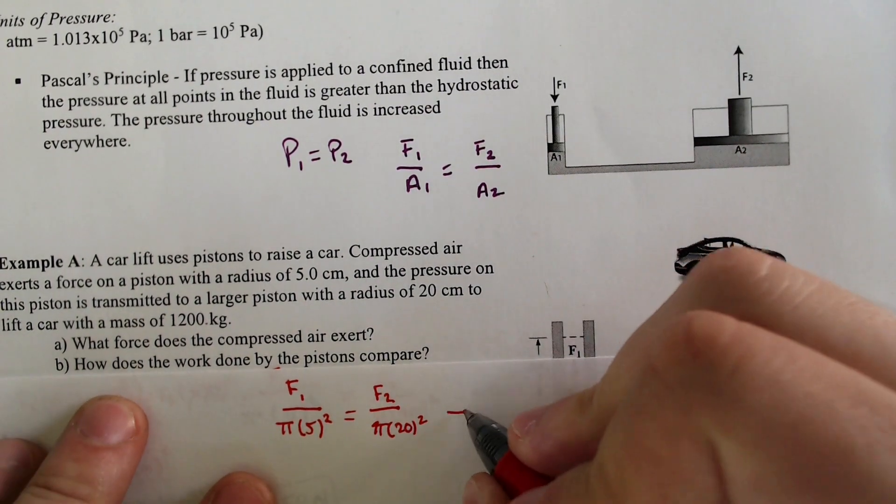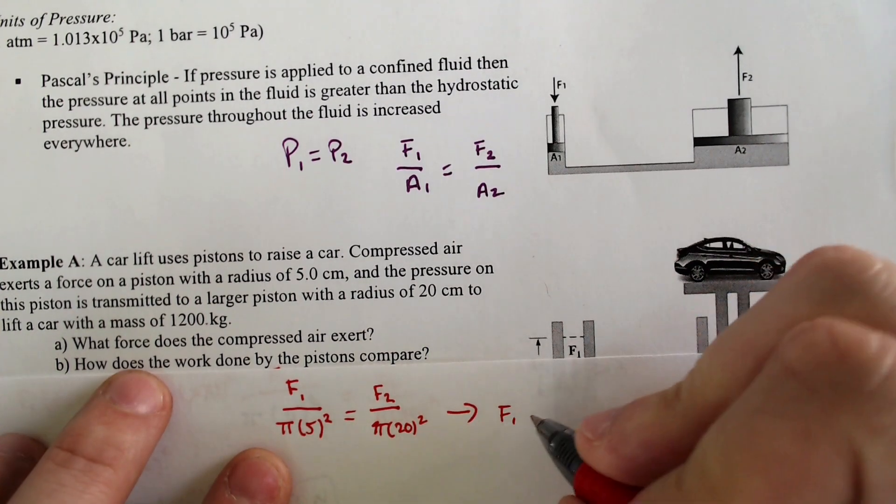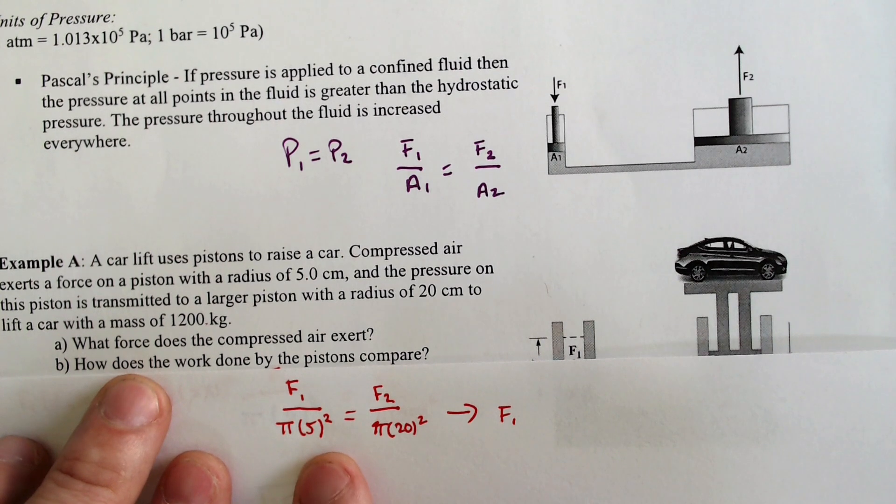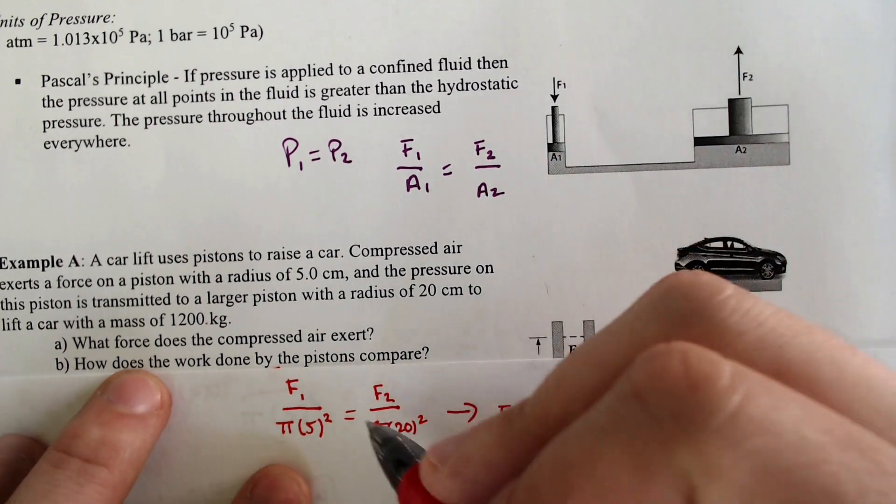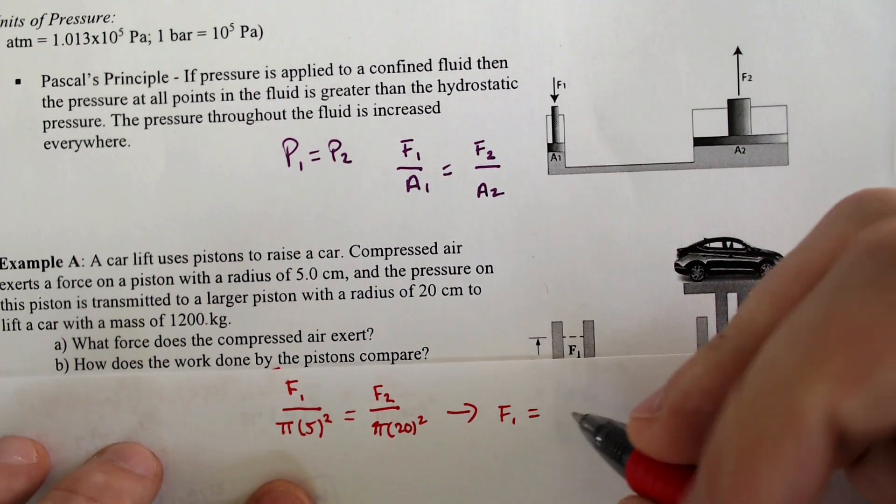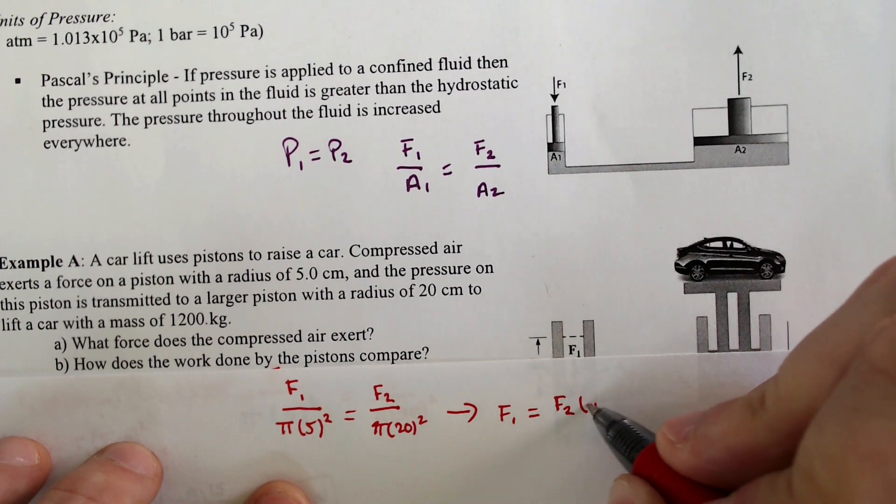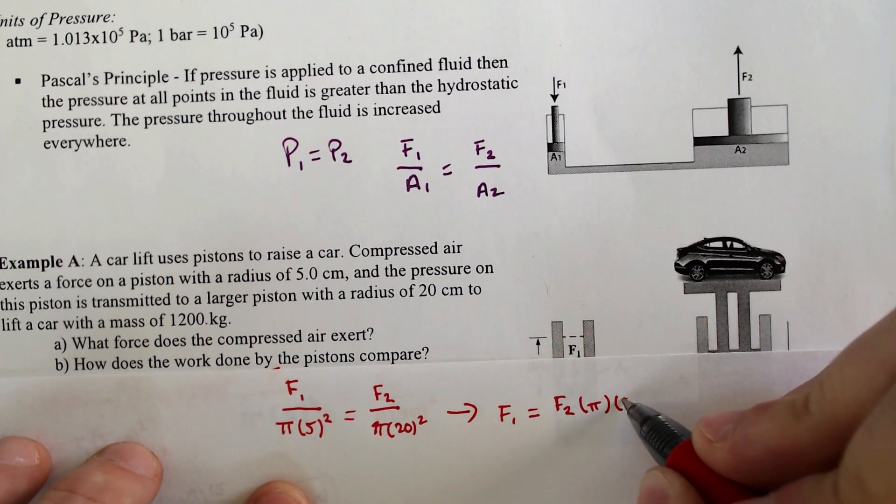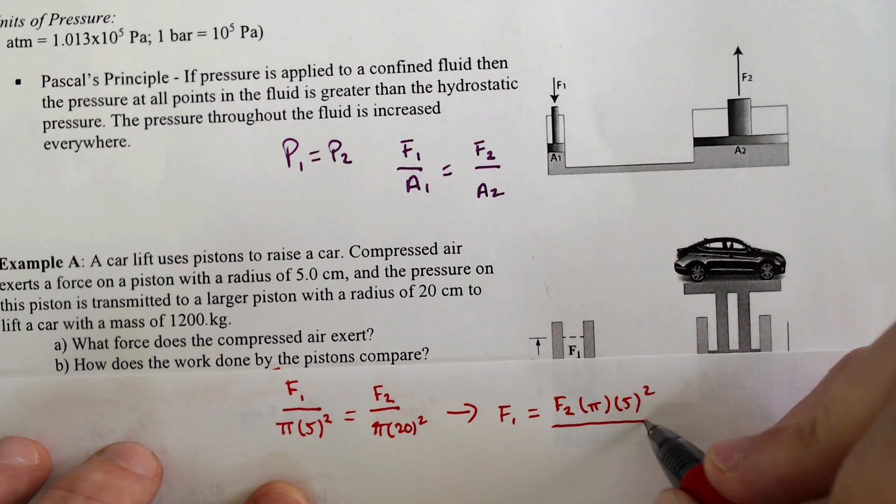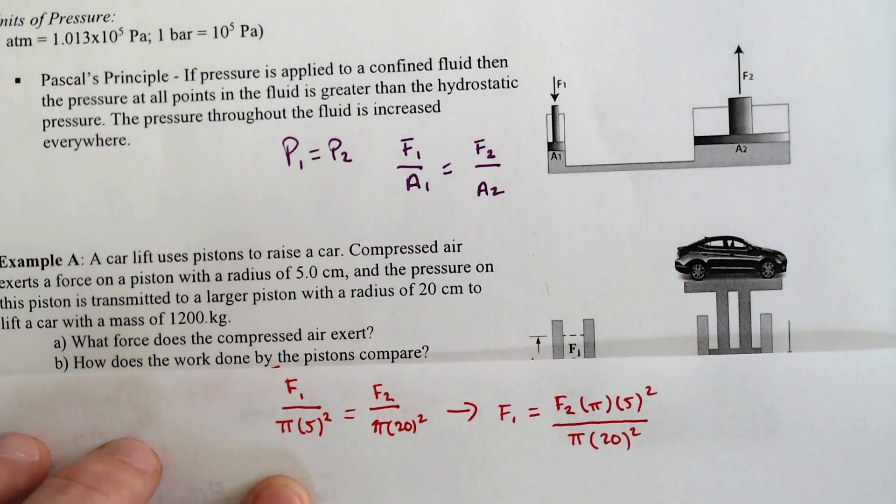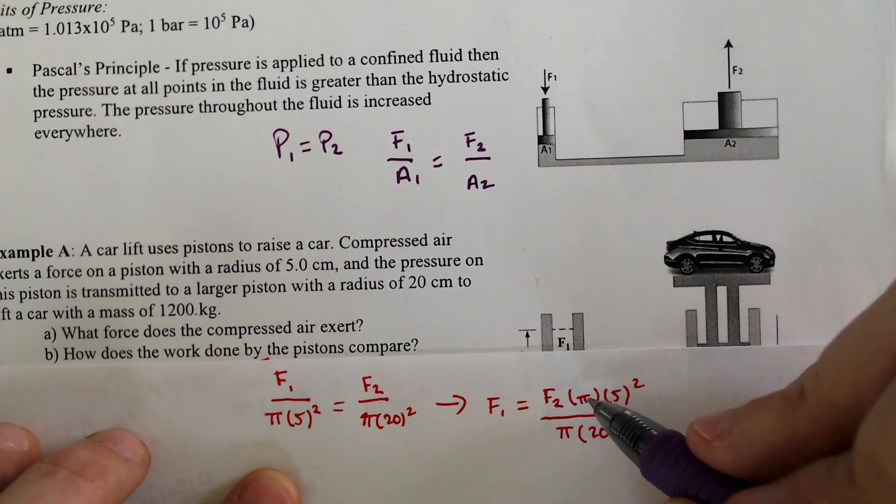If you cross multiply that, you will end up with force 1. Let's just multiply by the pi 5 squared because we're looking for force 1. Force 1 would equal force 2 times pi times 5 squared divided by pi times 20 squared.